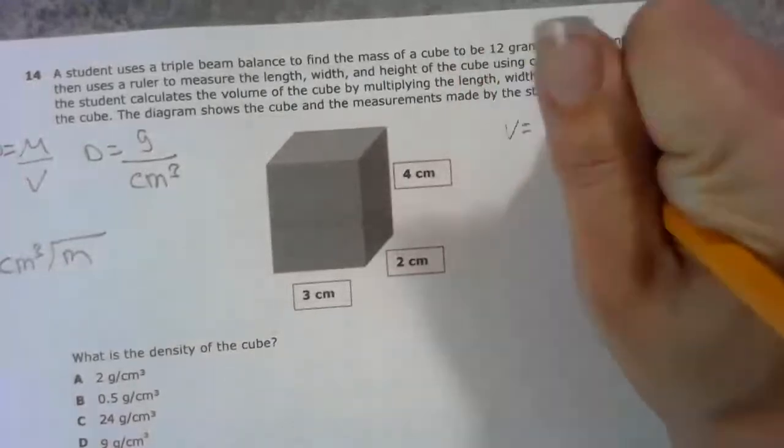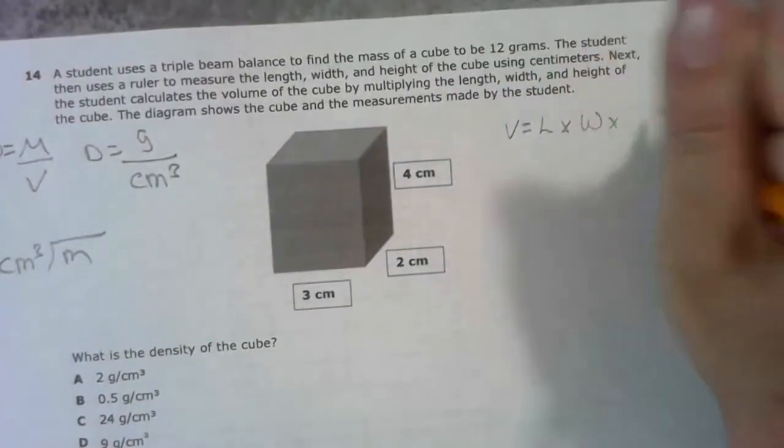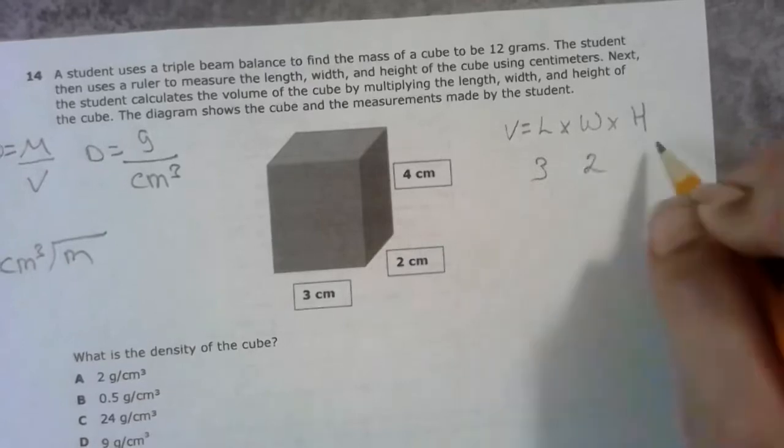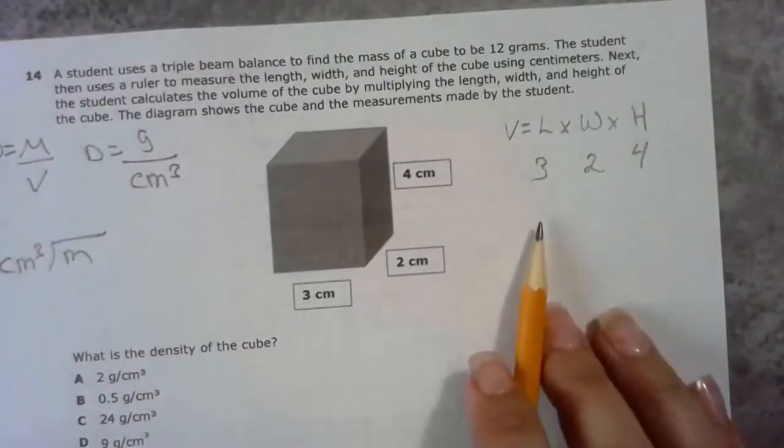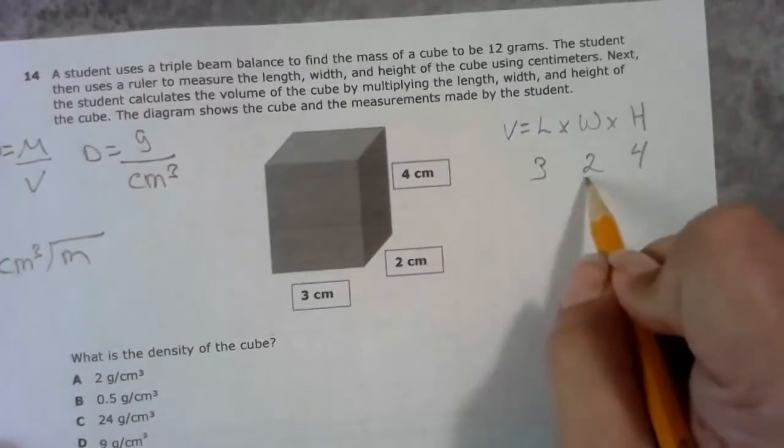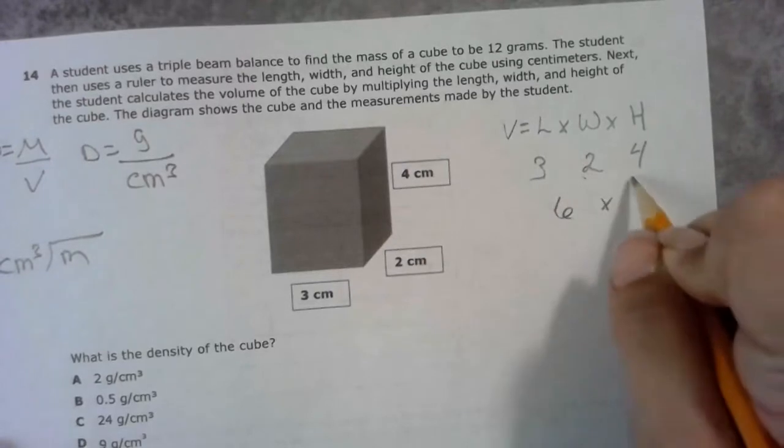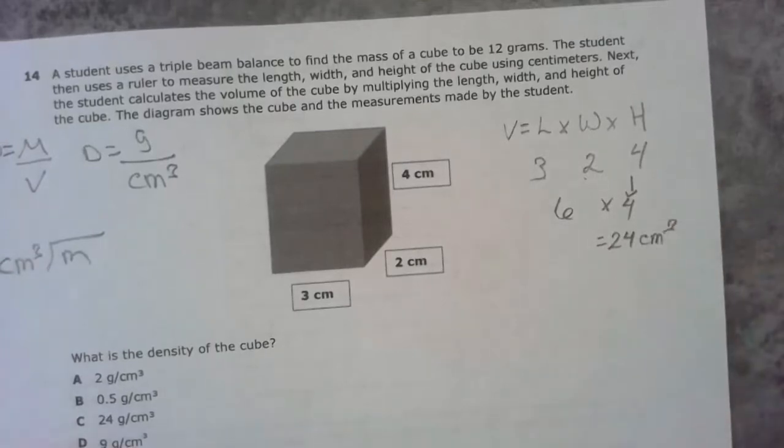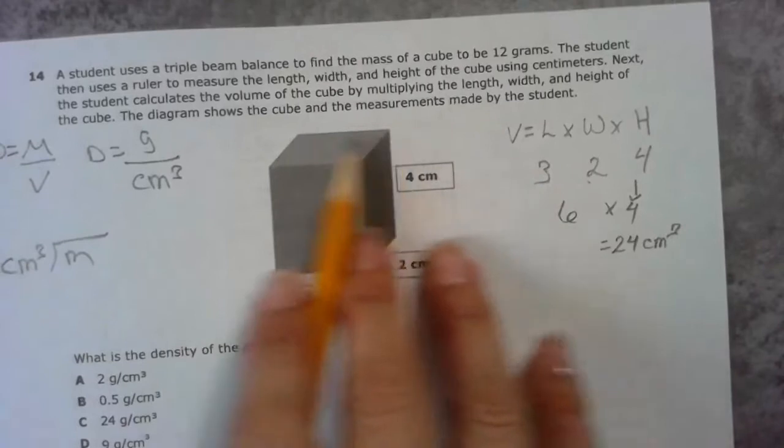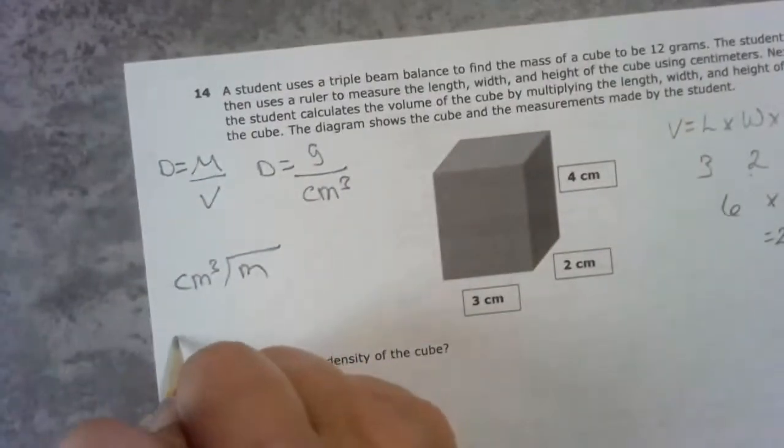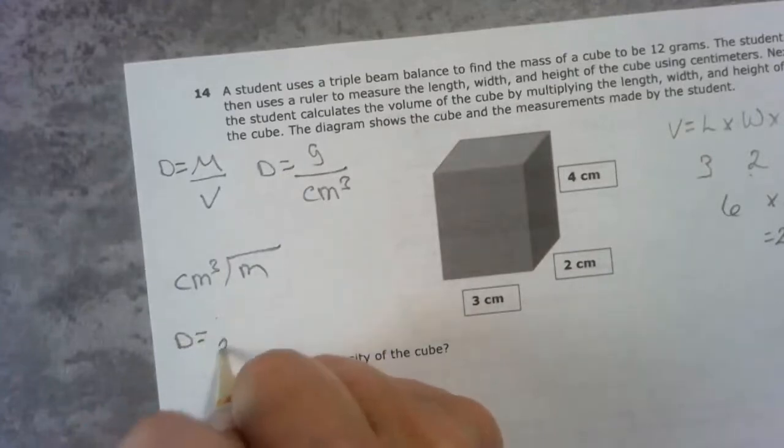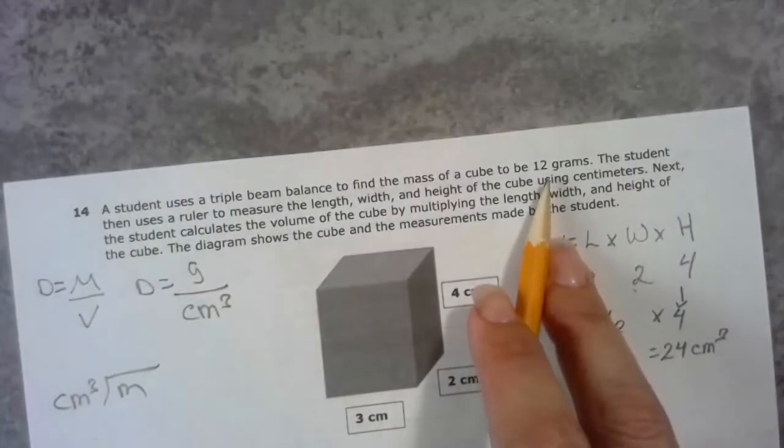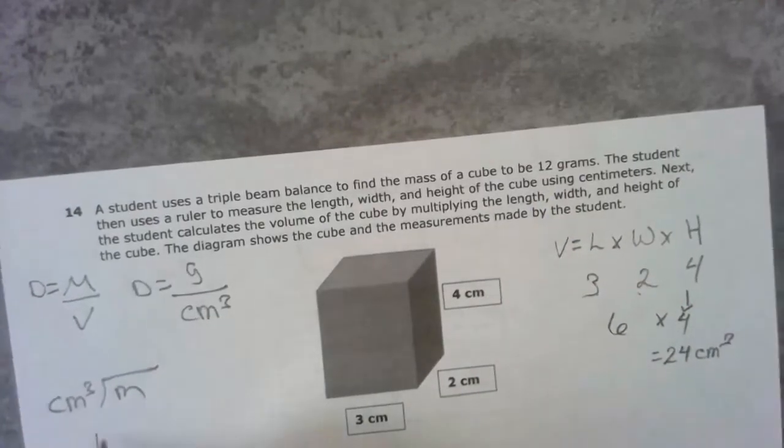My volume formula is length times width times height. I'm going to say my length is 3, my width is 2, my height is 4. 3 times 2 is 6, times 4 is 24 cubic centimeters. Now my volume is 24, and my mass, let me go back up to my problem, is 12.